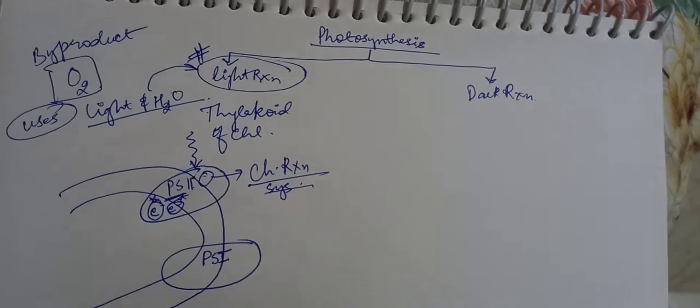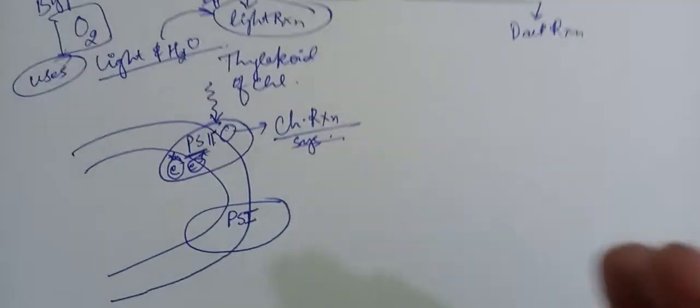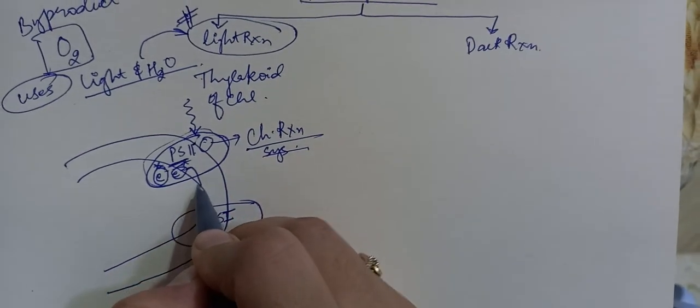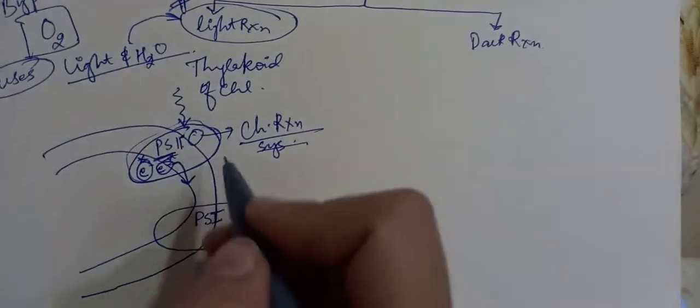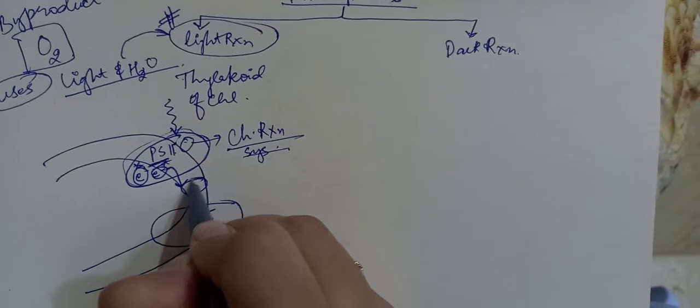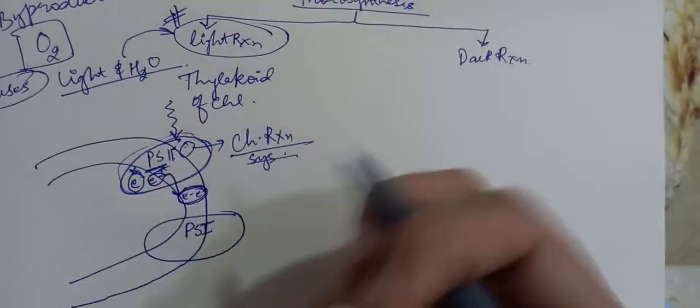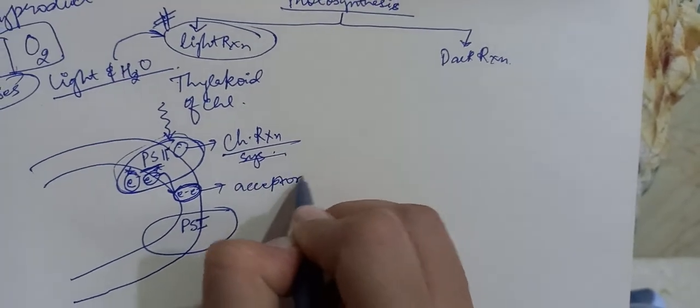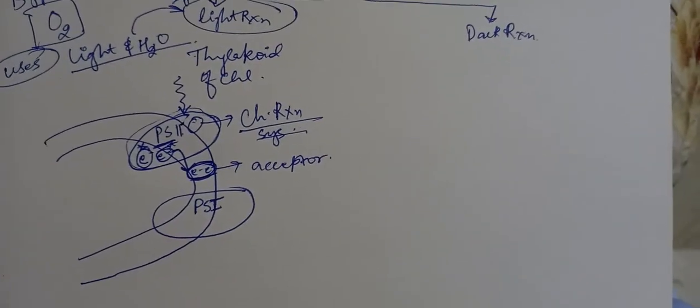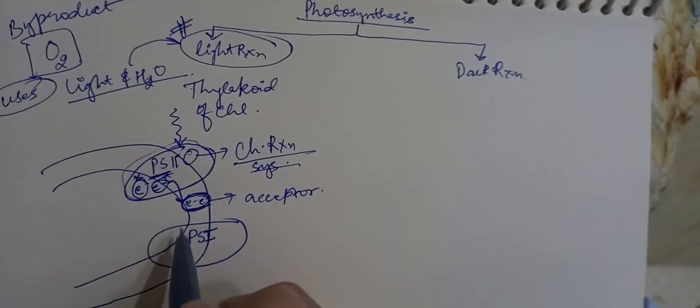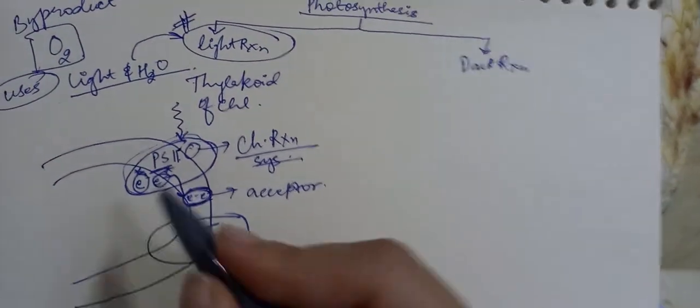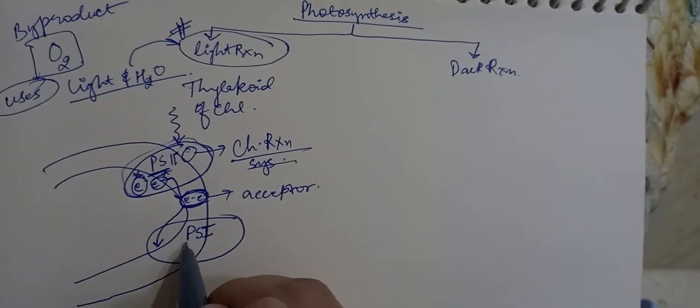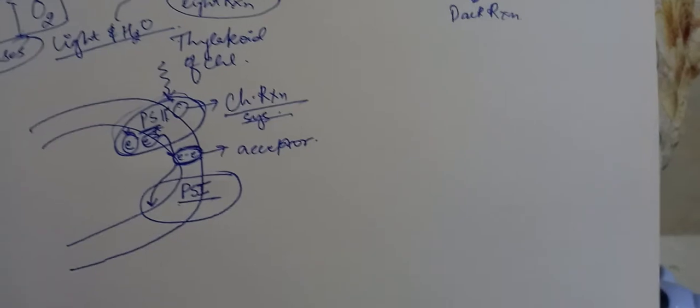Then they try to move out of this complex, of this photosystem, and they find escape for themselves and they go to a protein acceptor of these electrons. They again try to move forward towards this PS1 system.